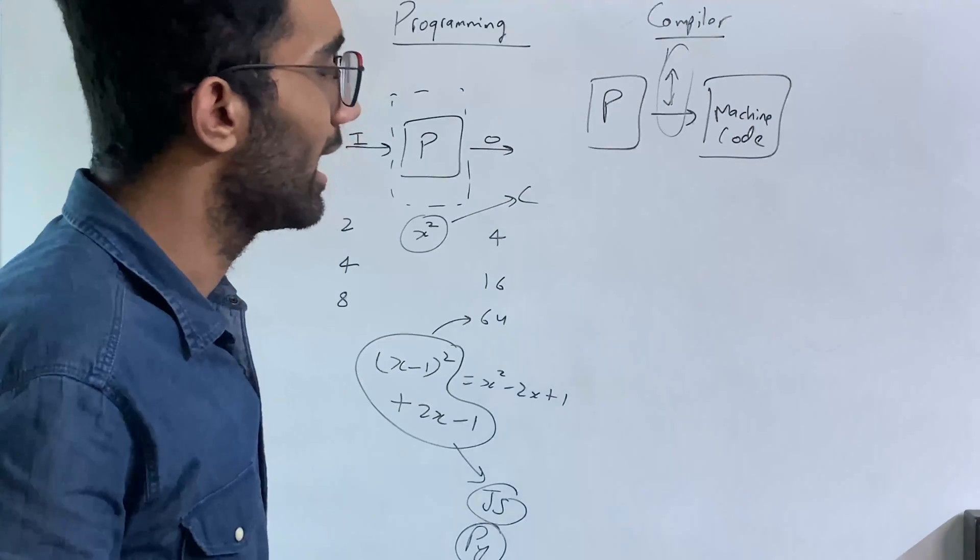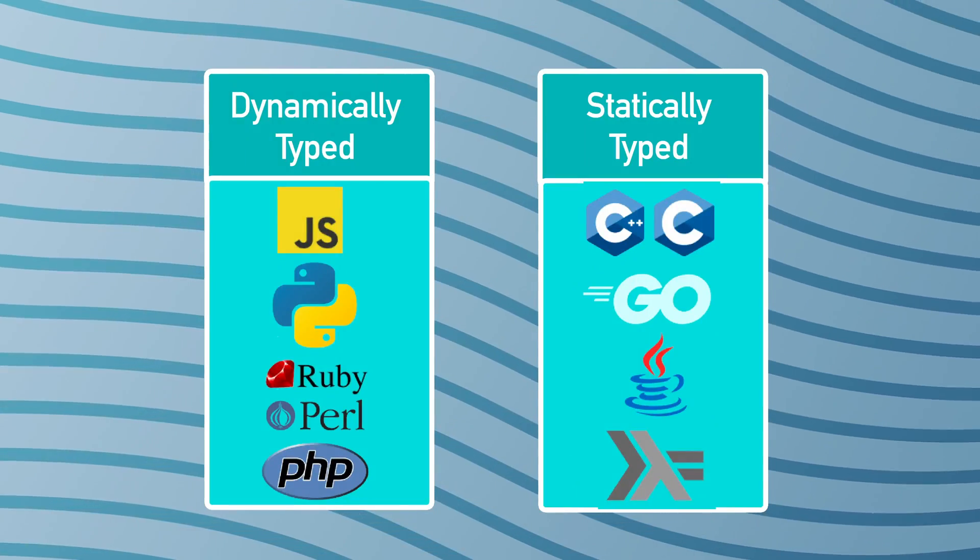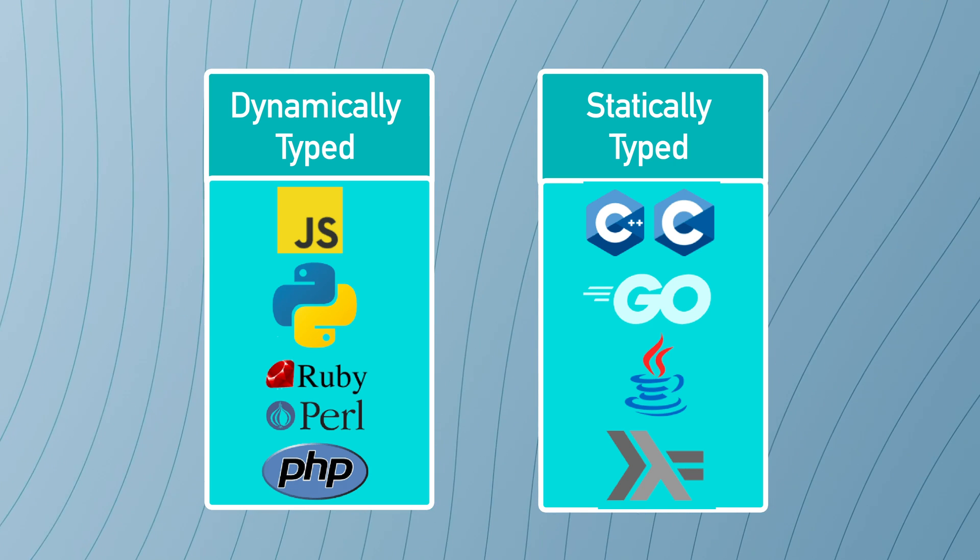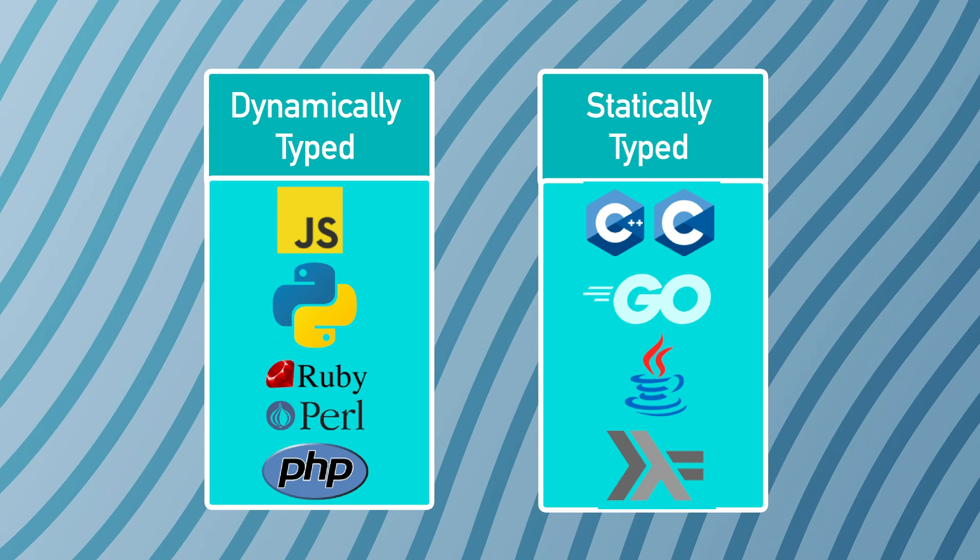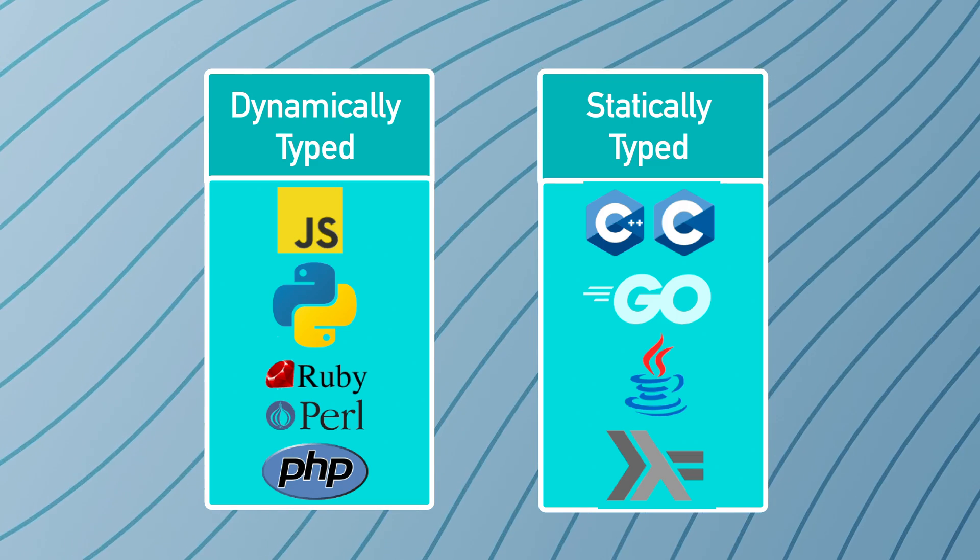Mostly, we have two sorts of languages in computers. The first one is dynamic languages, which is like your JS, your Python, PHP for example. And the other ones are statically typed languages, which are C, C++. These are a few examples.